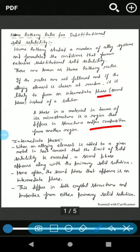I think you understand what is a phase. Now I will explain what is intermediate phase. When an alloying element is added to a given metal in such amount that the limit of solid solubility is exceeded, a second phase appears along with the primary solid solution.